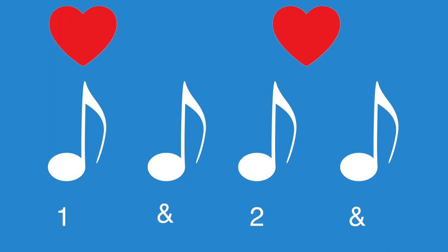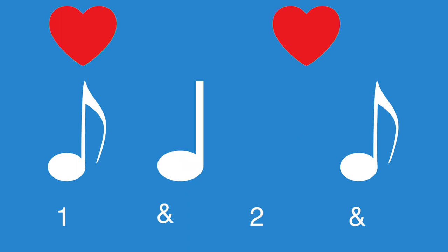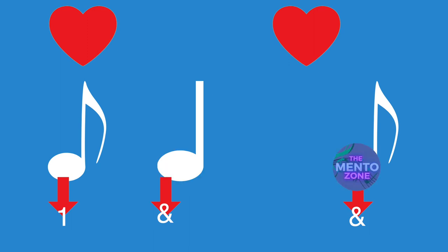Now, if we use the number system of counting, we would do it like this. First, label all the eighth notes: one, and, two, and. Then we do the same thing — we figure out which eighth note the rhythm is being played on and use only those numbers and syllables. We know that there's an eighth note on one, and we have a quarter note on 'and.' We don't have a new note starting on two, and we have an eighth note on the next 'and,' which means that we only say: one-and-and.